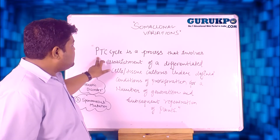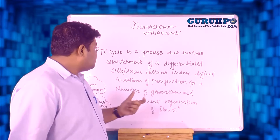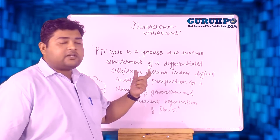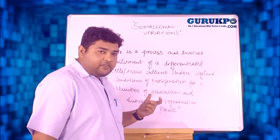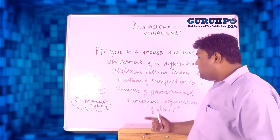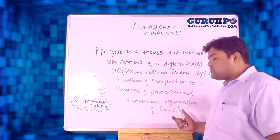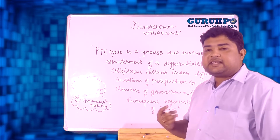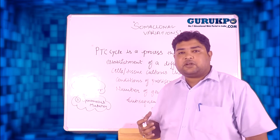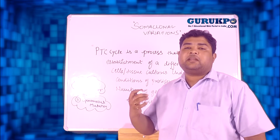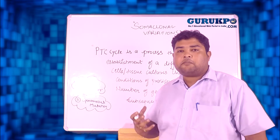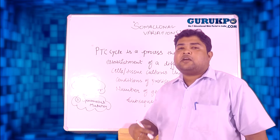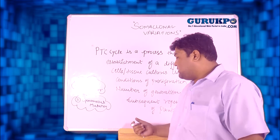The plant tissue culture cycle is a process that involves the establishment of a differentiated cell and tissue culture under defined conditions of proliferation for a number of generations, and subsequent regeneration of the plant. In other words, it is a process that establishes a cell and tissue under in vitro conditions where variations can be achieved inside a somaclonal tissue, and these variations can then be transferred by inheritance to future generations cloned as regenerates of these plants.